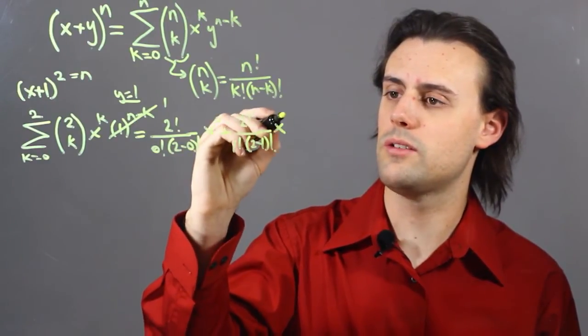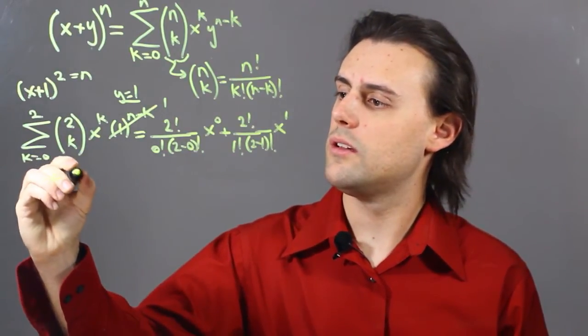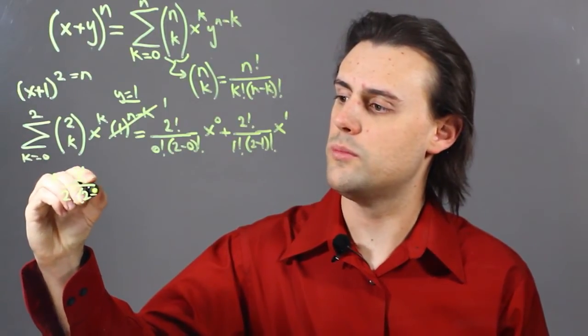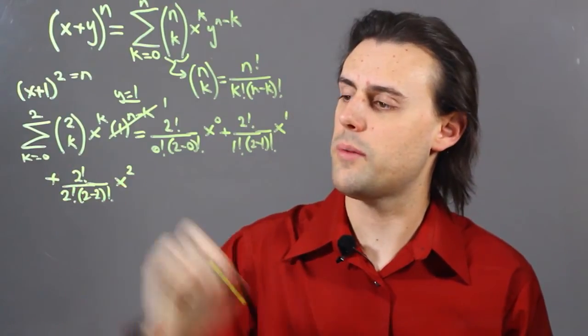plus 2 factorial over 2 factorial, and then 2 minus 2 factorial times x raised to the power 2.